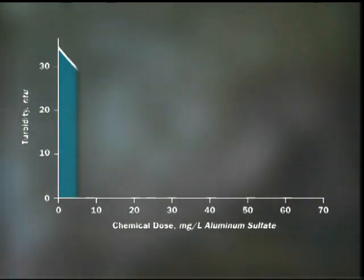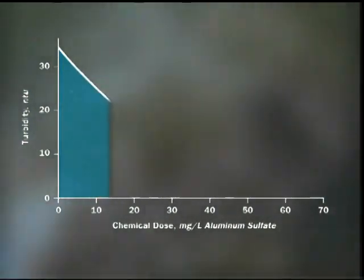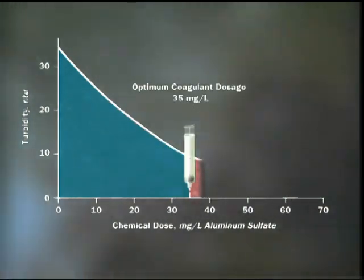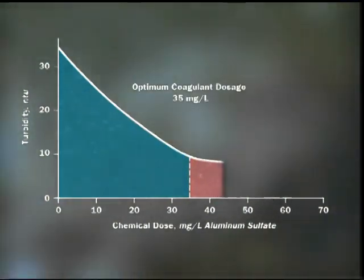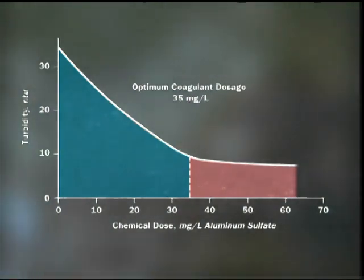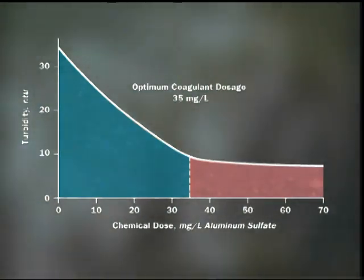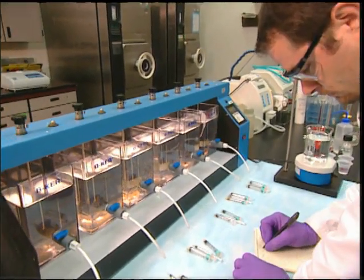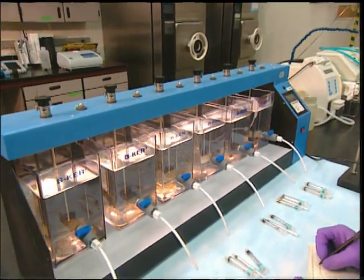Effective particle removal is dependent on the operator applying the right doses of the proper chemicals. At the proper dose, turbidity removal is maximized. Beyond this point, an increased chemical dose yields little additional turbidity removal. Simply adding more and more chemicals and expecting better treatment is not correct — the proper balance must be found. Optimizing treatment is the real point of jar testing.